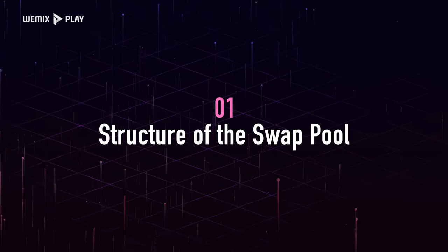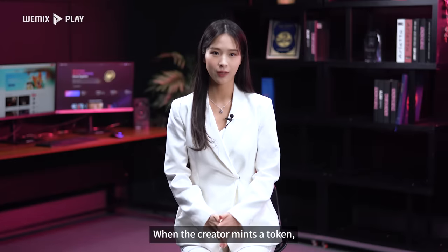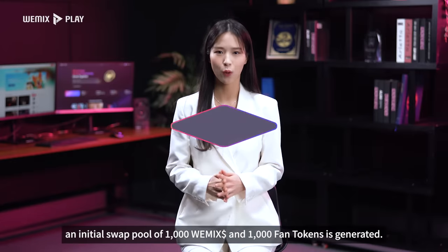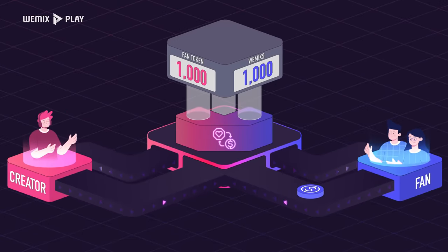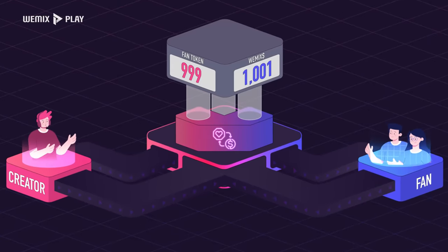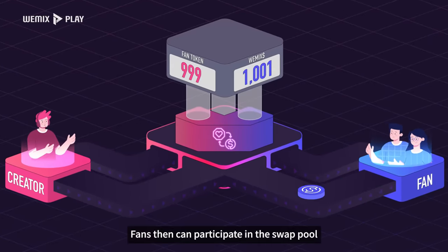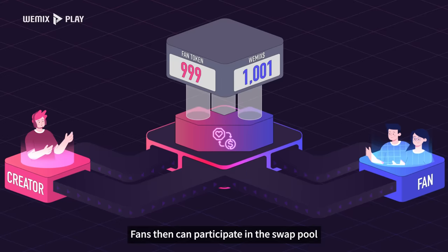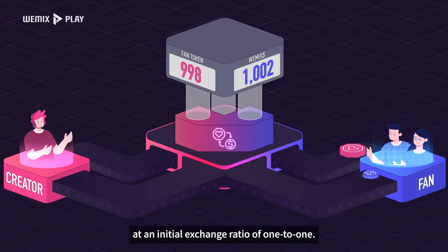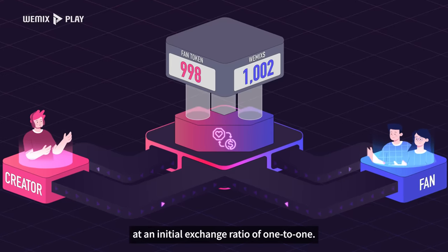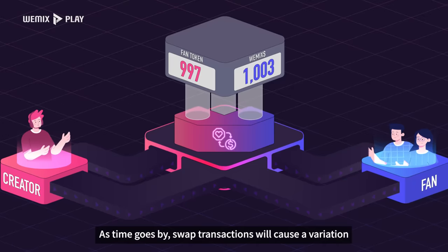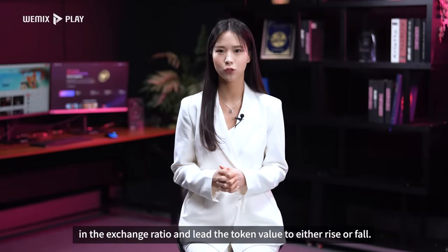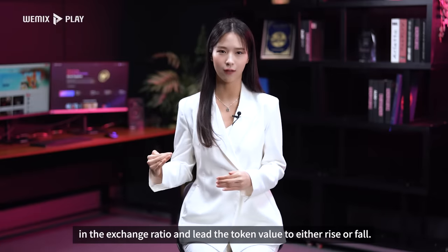Structure of the Swap Pool: When the creator mints a token, an initial Swap Pool of 1000 Wemix dollars and 1000 Fan Tokens is generated. Fans then can participate in the Swap Pool at an initial exchange ratio of 1 to 1. As time goes by, swap transactions will cause a variation in the exchange ratio and lead the token value to either rise or fall.